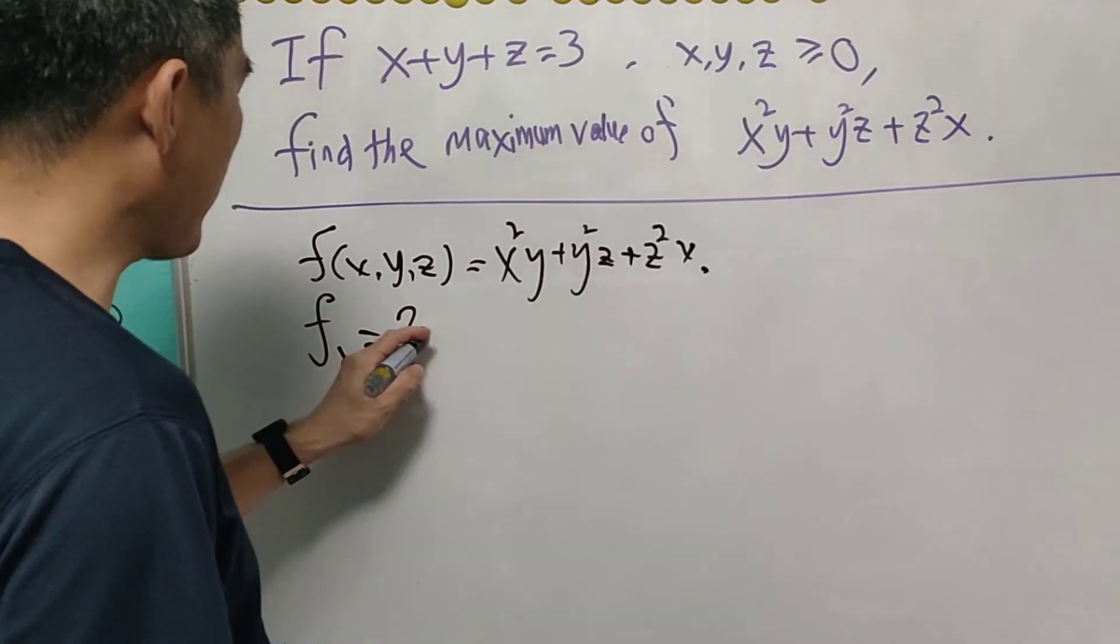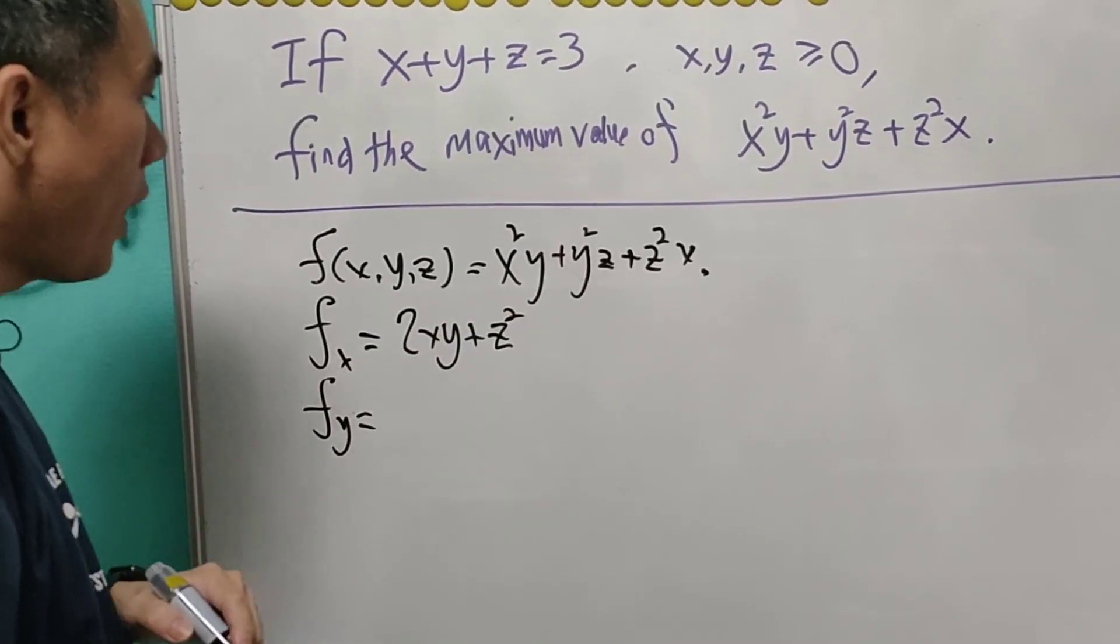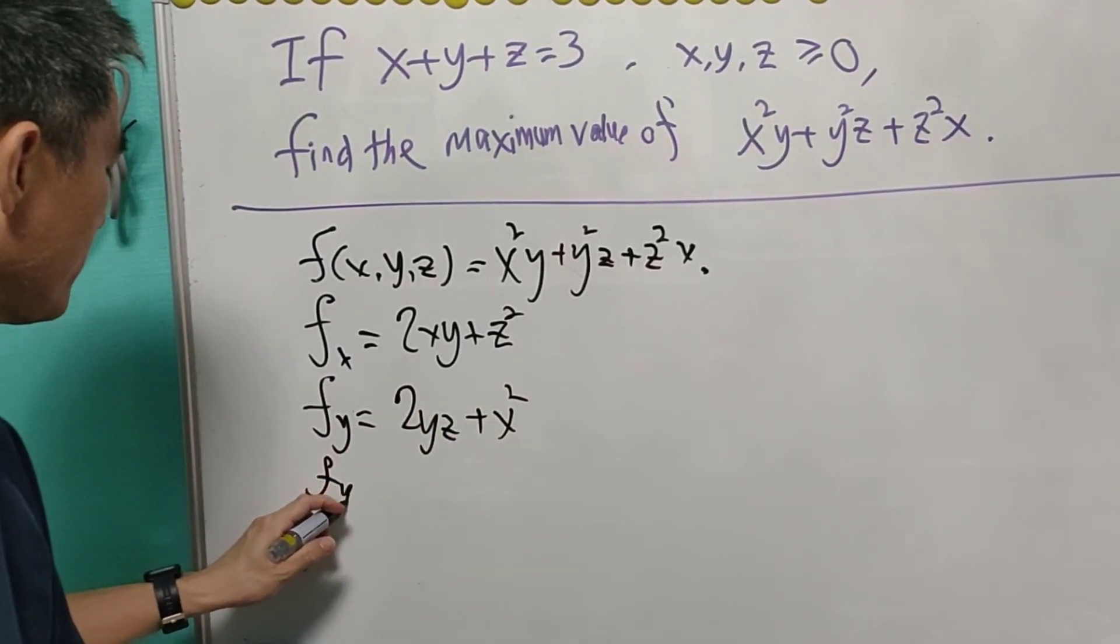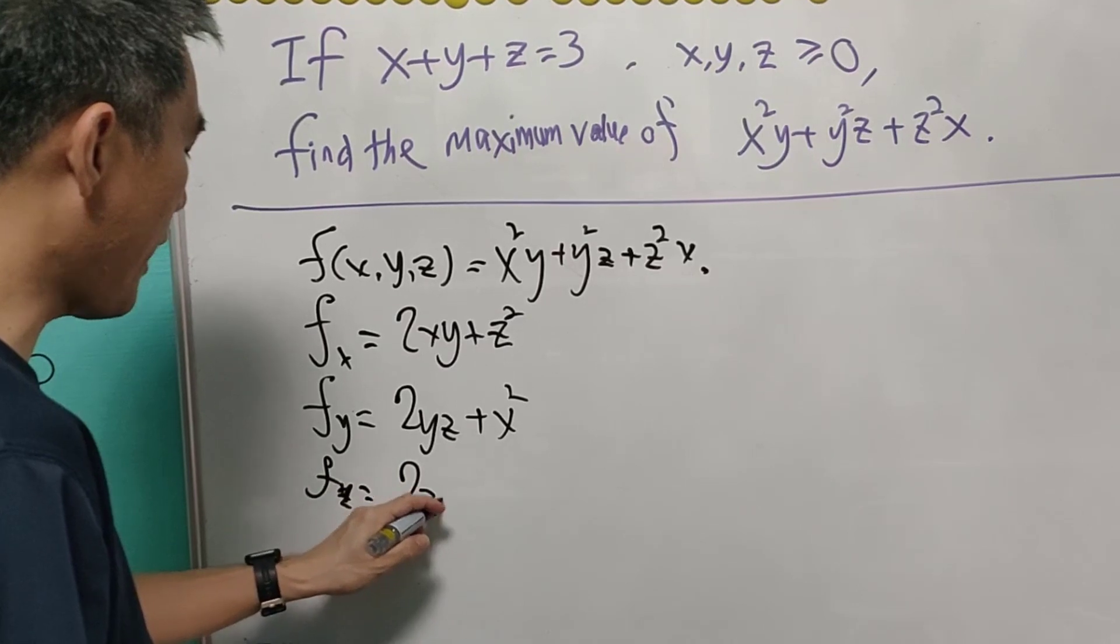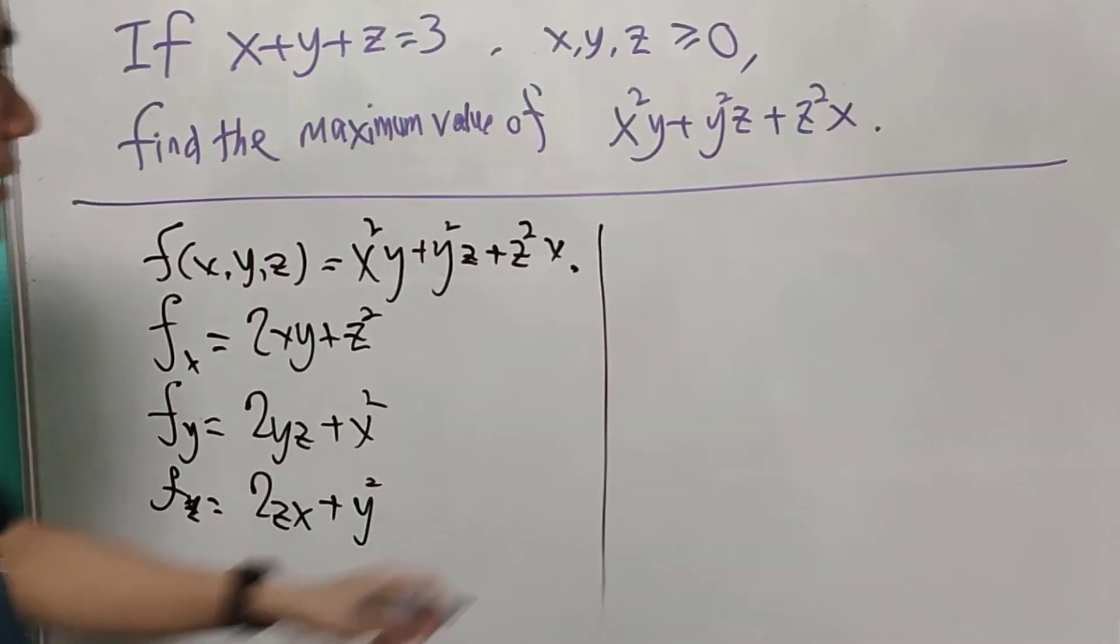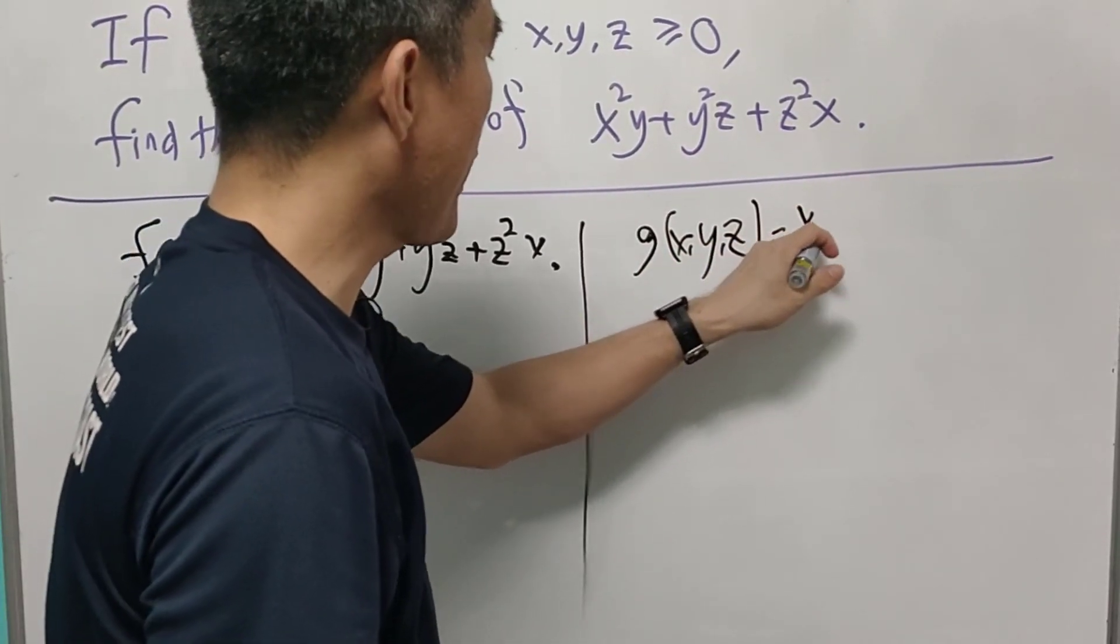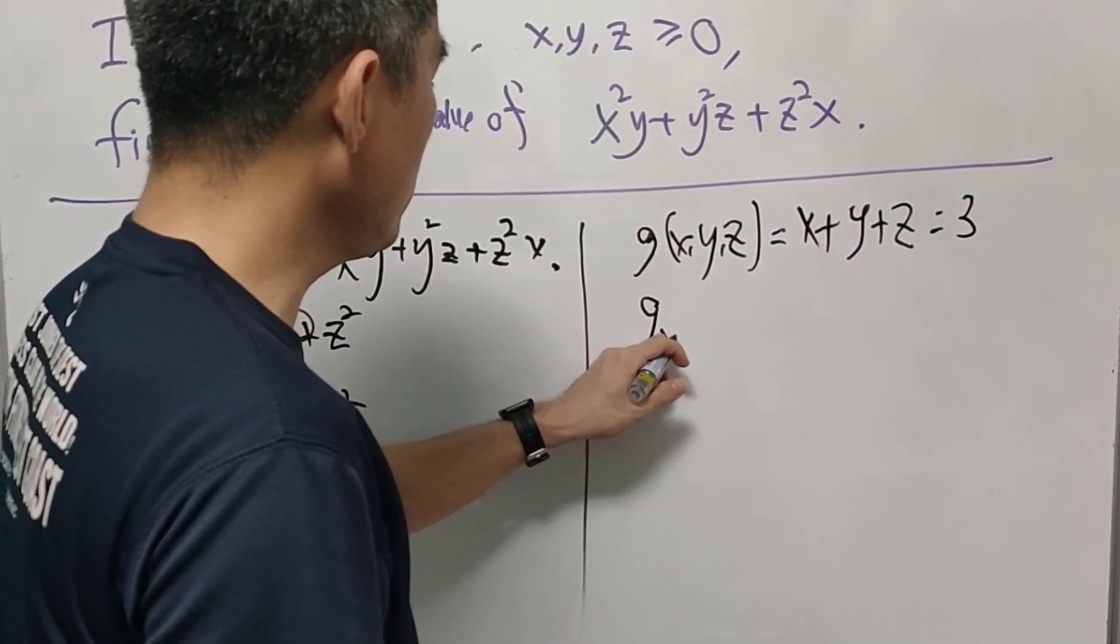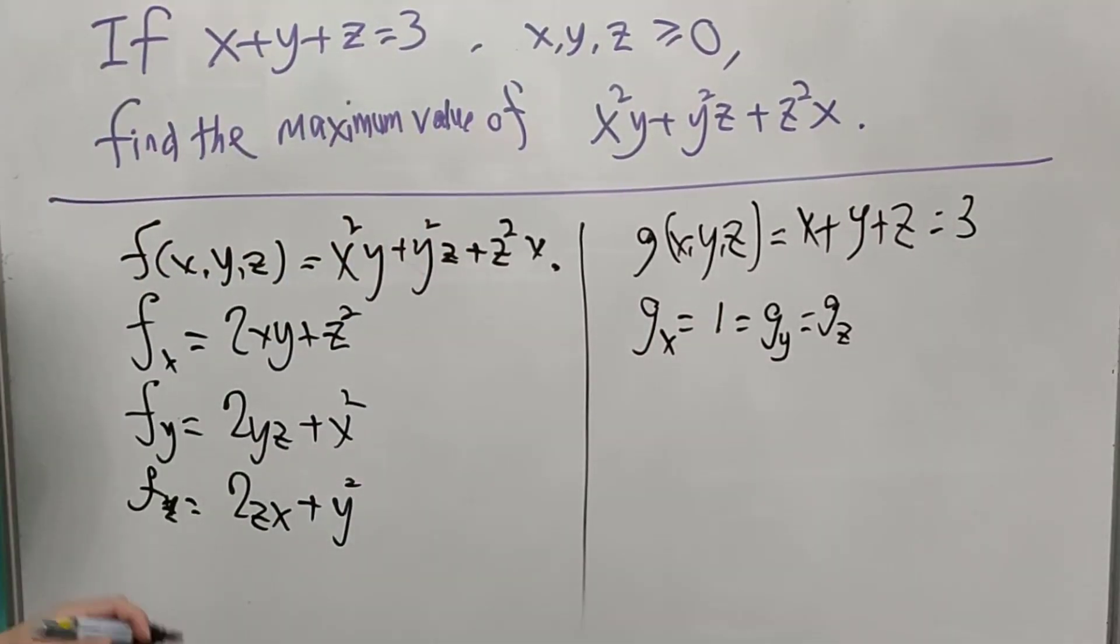We differentiate f with respect to x. So it will be equal to 2xy plus z squared. We differentiate f with respect to y, then we will have 2yz plus x squared. Likewise, differentiate f with respect to z, then we will have 2yz plus y squared. On the other hand, we will let this as g of x, y, z, and it is equal to x plus y plus z equal to 3. We differentiate g with respect to x, it is 1. Likewise, differentiate g with respect to y and z respectively, they all equal to 1.